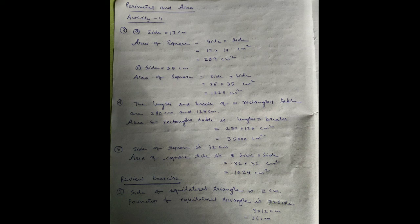Side equal to 32 centimeter. Number five: a blackboard length is 300 centimeter, breadth is 140 centimeter. Perimeter equal to 2 into bracket length plus breadth, equal to 2 into 300 plus 140 centimeter.